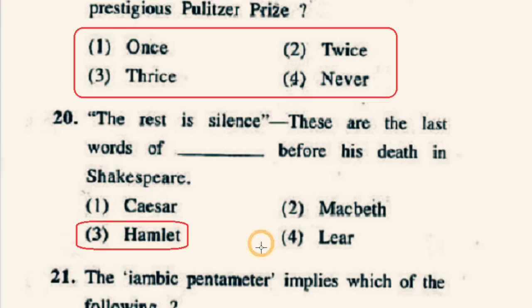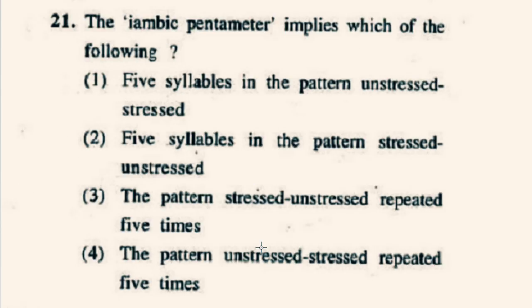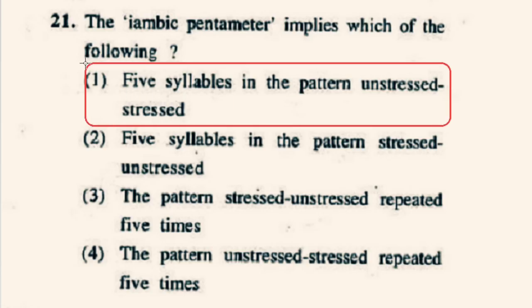Question number 21: The iambic pentameter implies which of the following? Iambic pentameter refers to a certain kind of line of poetry. 'Pent' means five. So a line of iambic pentameter consists of five iambs — five sets of unstressed syllable followed by stressed syllable. Option 1st — five syllables in the pattern unstressed, stressed — will be the correct option.